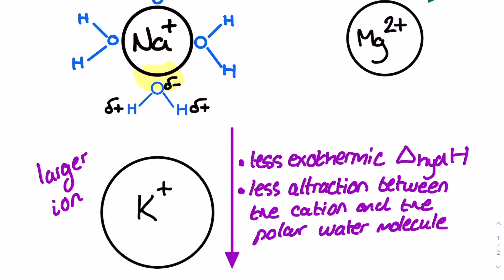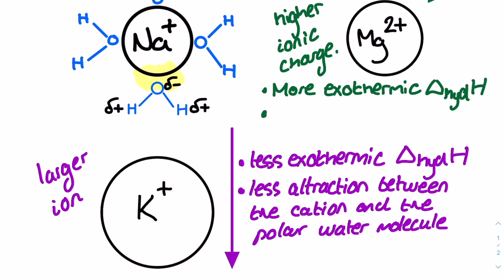Magnesium on the other hand has a more exothermic enthalpy of hydration than the sodium ion and this is primarily because it has a higher ionic charge causing for a stronger ion-dipole attraction than the sodium ion can to polar water molecules.